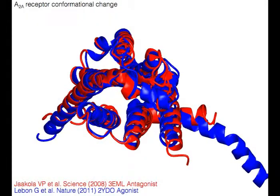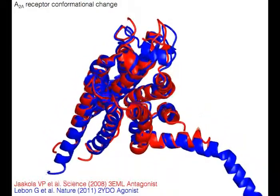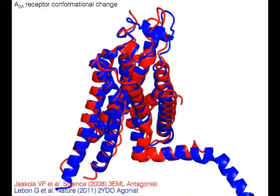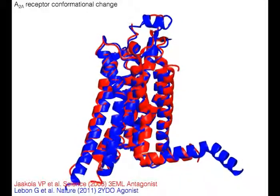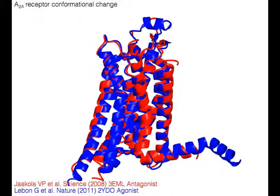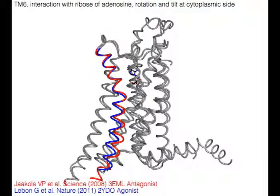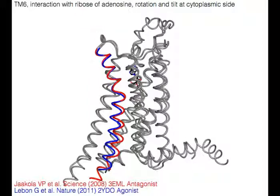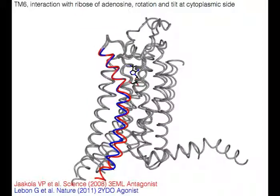Next is about the A2A receptor conformational change. The antagonist-bound form is shown in red and the agonist-bound form in blue. TM6 interacts with the ribose of the ligand adenosine, and this interaction rotates and tilts TM6 at the cytoplasmic side.